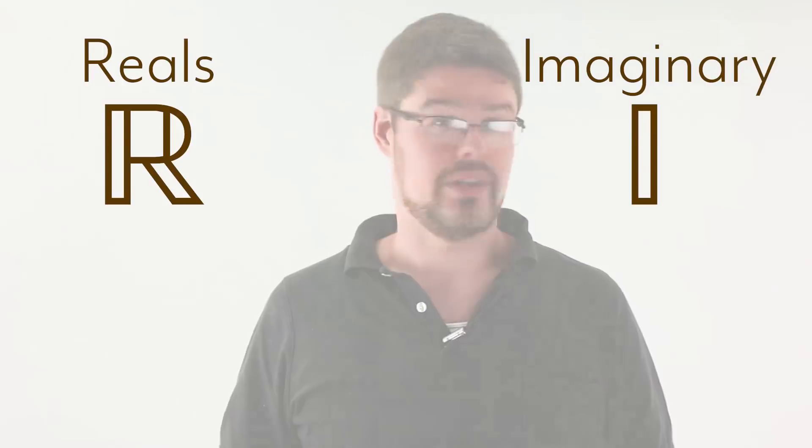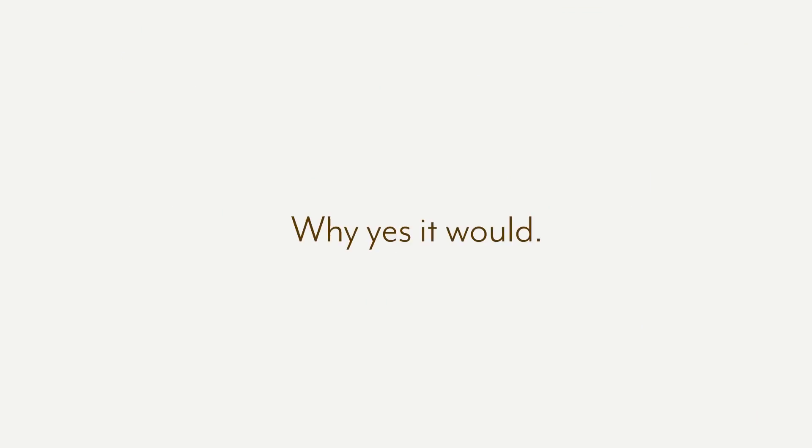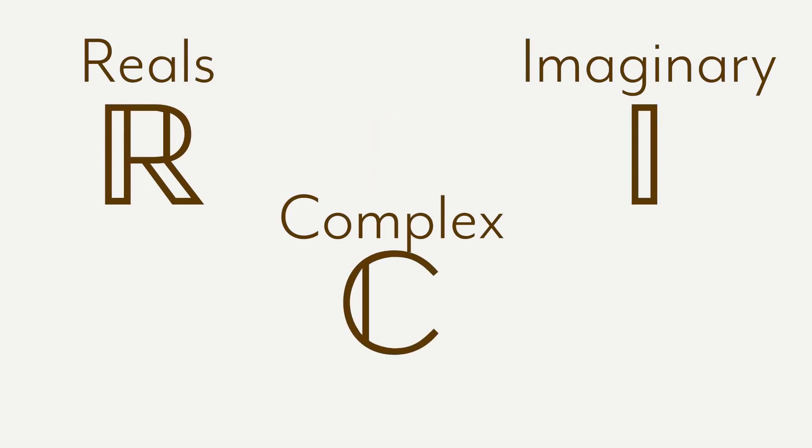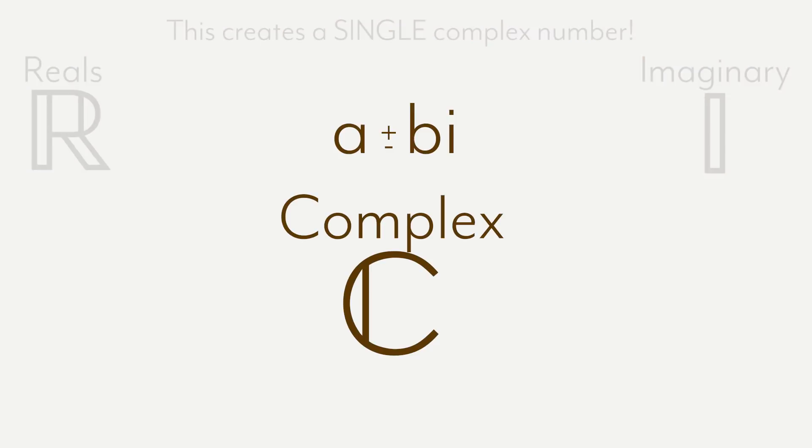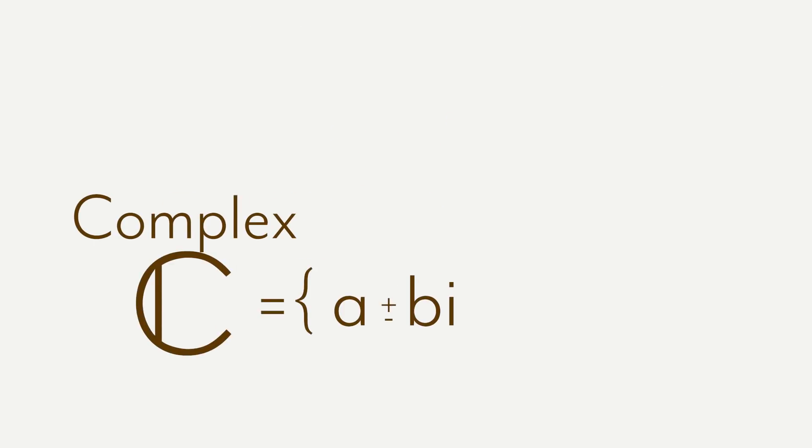But what would happen if we put them together, real and imaginary? Would that be complex? Why, yes it would. In fact, that's what we call them, the complex numbers. You literally just combine with addition or subtraction all of the reals to all of the imaginary numbers. And there you have it. We have invented a new type of number, and the set it lives in.